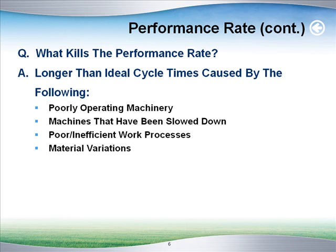What kills performance rate? Longer than ideal cycle times. Those long cycle times come from several different things: poorly operating machinery, machines that have been slowed down. Sometimes it makes sense to slow down a machine, but a lot of times it does not — that's something you have to look at with your individual equipment and what your customers are asking for. A lot of times it's poor and inefficient work processes. I can't tell you how often I find operators walking away from their machines to get materials, and that causes idle time for the machine. If you can put the materials right where the operators are working, that's the best place.